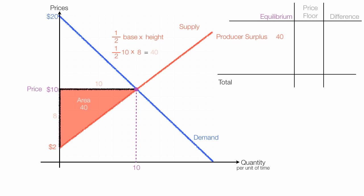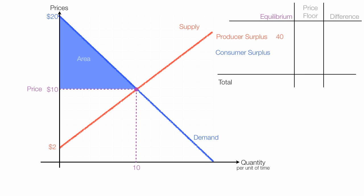Consumer surplus is the area below the demand curve and above price, or the area of this triangle. This side of the triangle is 10, and the base is also 10. So the area is 1 half base times height, or 1 half 10 times 10, which is equal to 50. So consumer surplus is 50.